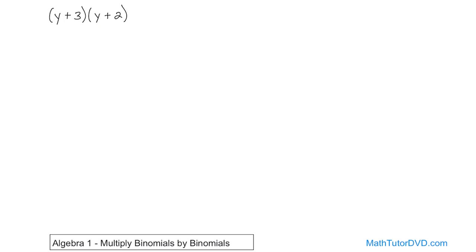In the previous lesson we talked about multiplying monomials times binomials and polynomials. So for the sake of argument, pretend for a second that the y isn't there at all — just put your thumb over it. You just have the 3 times (y plus 2). How would you do that? You would use the distributive property — take the 3, multiply times y, and take the 3, multiply times 2.